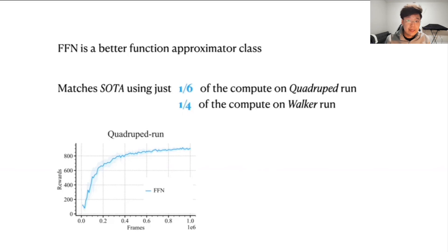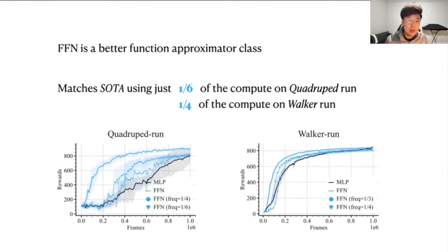We also show that the Fourier feature network is, in general, a better function approximator class that requires much less optimization. And this allows us to match the state-of-the-art performance with only one-sixth of the compute on quadruped run and with just a quarter of the compute needed on walker run.